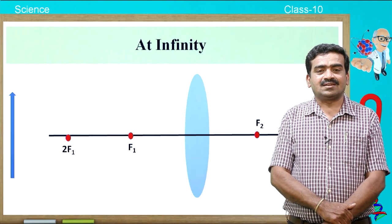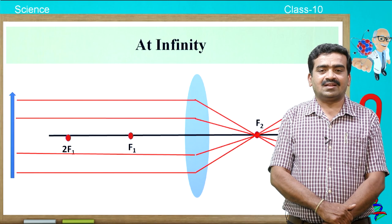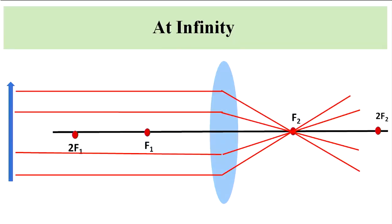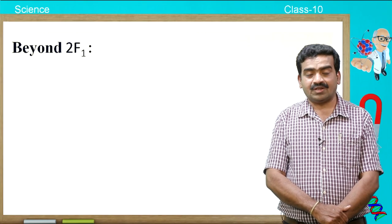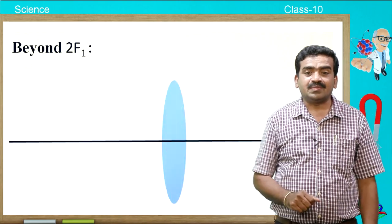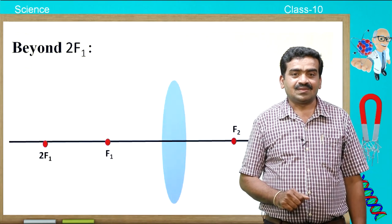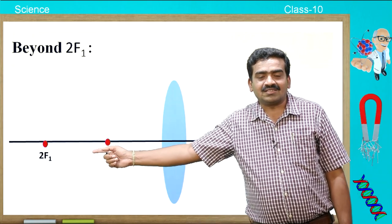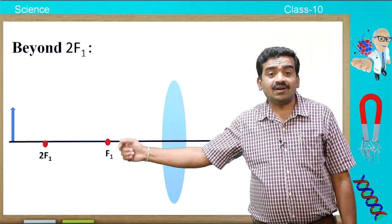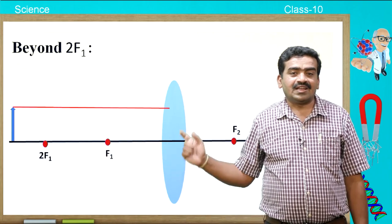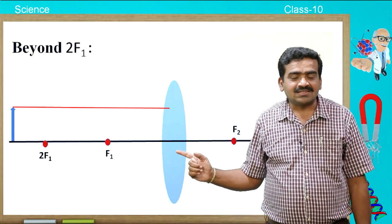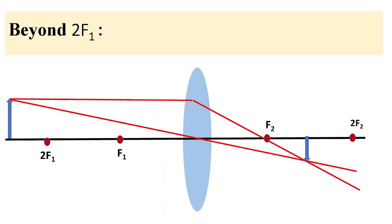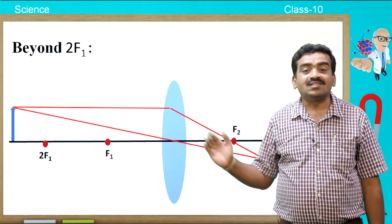I am showing you again — see the animation and recall the points related to the object being at infinity. Now, come to the next position: beyond 2F1. If the object is placed beyond 2F1, the ray of light travels parallel to the principal axis and after refraction, the image is formed between F2 and 2F2 on the other side of the lens.